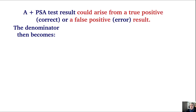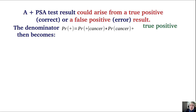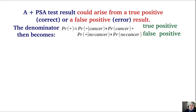A positive PSA test result can arise from two sources: a true positive (a correct result) and a false positive (an error). The denominator in the Bayes equation becomes the sum of: the probability of a positive test given cancer times the probability of having cancer (true positive), plus the probability of a positive test given no cancer times the probability of not being ill (false positive).